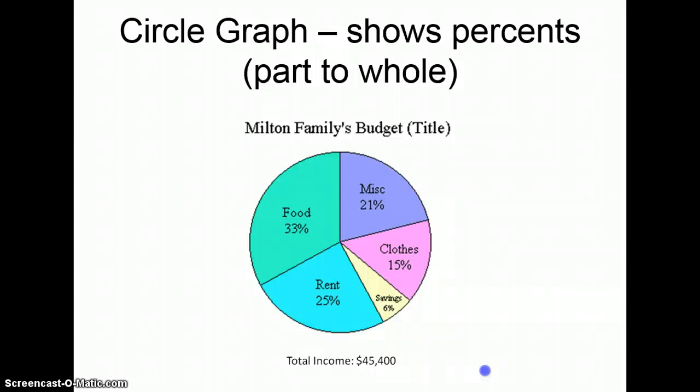A circle graph shows percents, and it has to be part of a whole. We can't compare part to part or just a small portion of a whole. Because it shows percents, all of the percents always have to add up to 100.